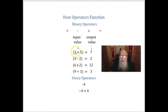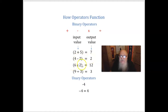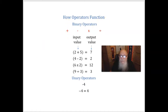For example, plus combines 2 and 5 to give us 7. 4 and 2 are operated on by the minus sign and give us 2. 6 and 2 are operated on by the times sign, giving us 12. And 9 and 3 are operated on by the division sign, giving us 3. Since these operators act on two input values, they're called binary operators. We also have operators that act on only one number — that's called a unary operator, like the negation sign in math. The minus sign turns 4 into negative 4, or negative negative 4 back into positive 4.